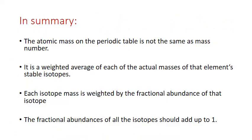To summarize: the atomic mass on the periodic table is not the same as mass number. It's a weighted average of the actual masses of each of an element's stable isotopes. Each isotope mass is weighted by the fractional abundance of that isotope, and the fractional abundances of all isotopes should add up to one. Thank you for listening.